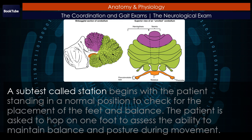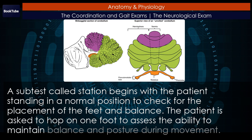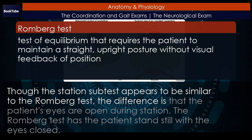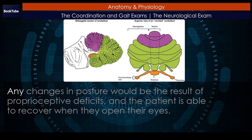A subtest called station begins with the patient standing in a normal position to check for the placement of the feet and balance. The patient is asked to hop on one foot to assess the ability to maintain balance and posture during movement. Though the station subtest appears to be similar to the Romberg test, the difference is that the patient's eyes are open during station. The Romberg test has the patient stand still with the eyes closed. Any changes in posture would be the result of proprioceptive deficits, and the patient is able to recover when they open their eyes.